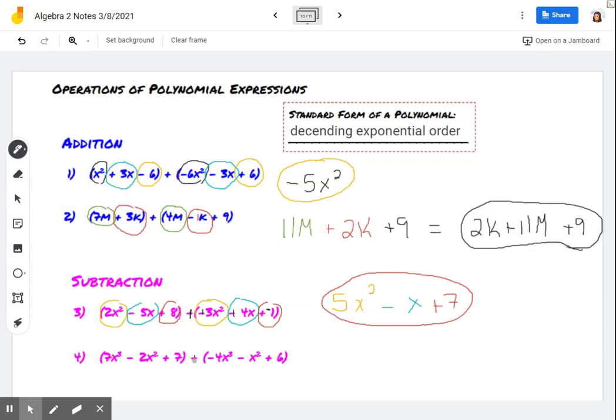I'm going to change my subtraction sign to an addition sign. And when I do that, change every sign after it. Let's combine some like terms. So 7x cubed, 4x cubed makes 11x cubed.